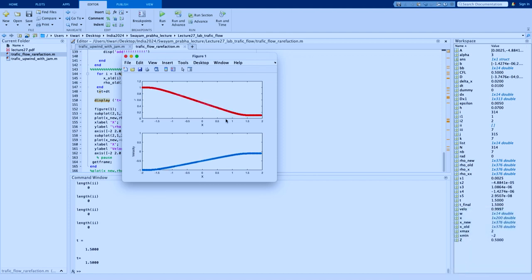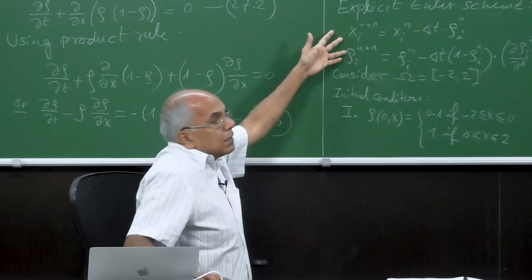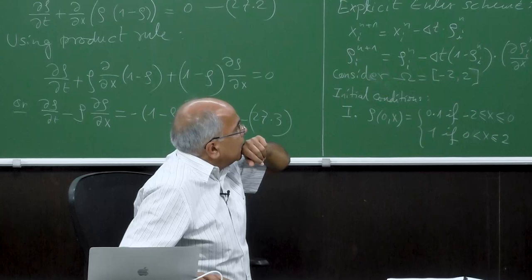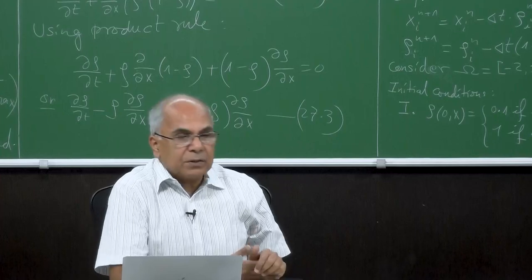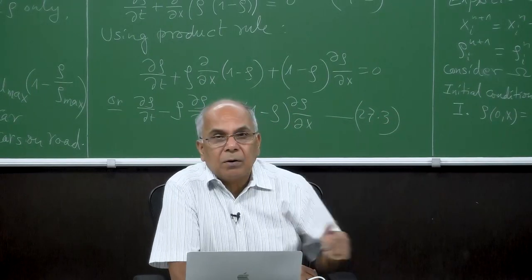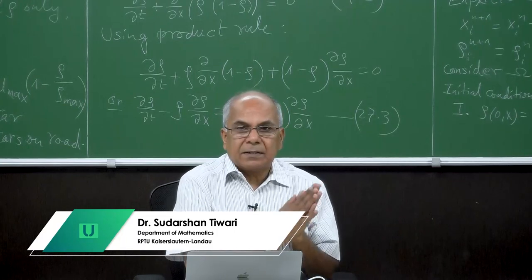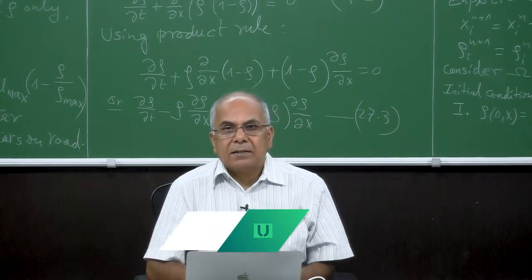So now we have learned a little bit about the traffic scenario that we observe in day-to-day life on the road. I think we can stop the traffic flow equation here. In the next lecture we will continue with higher-order time integration — the current scheme is first-order explicit Euler, and I want to go to second-order time stepping to see how the solution improves, though this will require more computational time. Thank you.